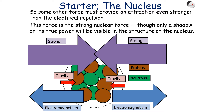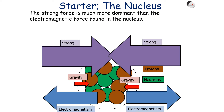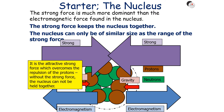This force is the strong nuclear force, though it's only a shadow of its true power, as most of its power is visible on the quark scale. The strong force is the force between particles — quarks, gluons, and anti-quarks — inside a proton or a neutron. The strong nuclear force found overall in the nucleus is a complicated residue of various cancelling effects. The strong force is much more dominant than the electromagnetic force in the nucleus, which is what keeps the nucleus together. The nucleus can only be a similar size to the range of the strong force, and it's the attractive strong force which overcomes the repulsion of the protons.